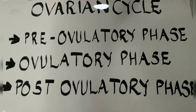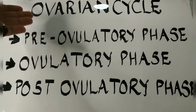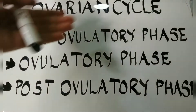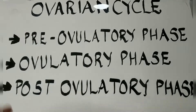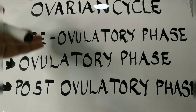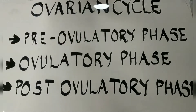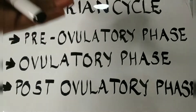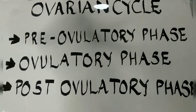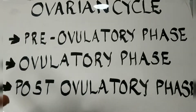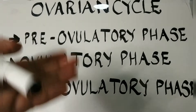Ovarian cycle. During the reproductive cycle in females, that is the 28-day cycle, certain changes occur inside the ovary. It can be divided into three phases: the pre-ovulatory phase, ovulatory phase, and the post-ovulatory phase. The pre-ovulatory phase is before ovulation, mainly consisting of maturation of the ovarian follicles. The ovulatory phase is when the ovum is released, and the post-ovulatory phase is after ovulation.